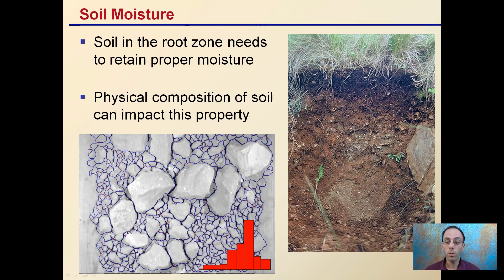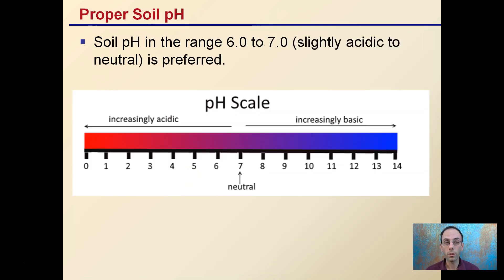We have soil moisture. We do need to have some moisture in the soil — the root zone needs to maintain a proper moisture level. This means it's not waterlogged and it's not too dry; it's going to have that nice even amount. The physical properties of the soil can impact this, such as the particle size — how many large or small particles does it have, whether it's sandy, clay, or gravel-based. That can really impact the ability of a soil to maintain moisture levels.